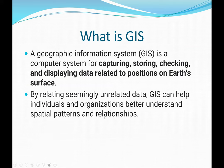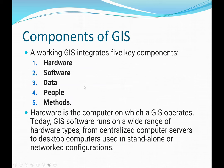By relating similarly unrelated data, GIS can help individuals and organizations to better understand spatial patterns and relationships. The components of GIS are five: hardware, software, data, people, and the methods we are going to use.